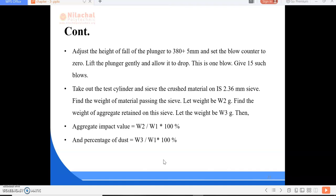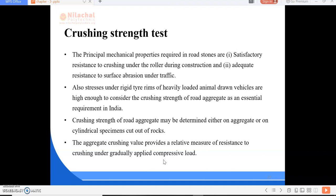Then how we will calculate the aggregate impact value? For calculating the aggregate impact value we have to do W2 by W1 into 100 percent. And the percentage of dust is W3 divided by W1 into 100 percent. In the next class we are going to study about the crushing strength test.